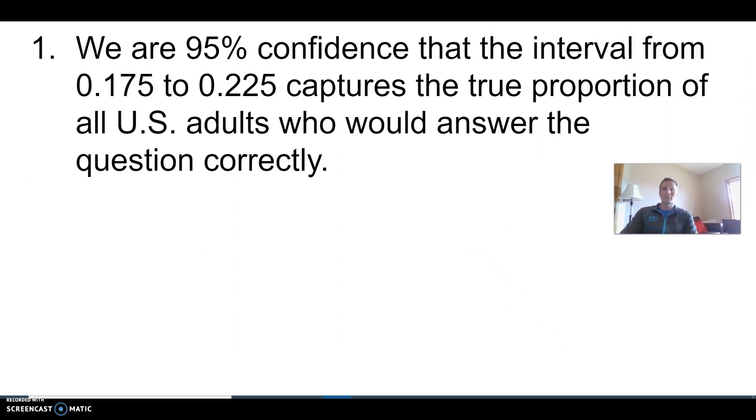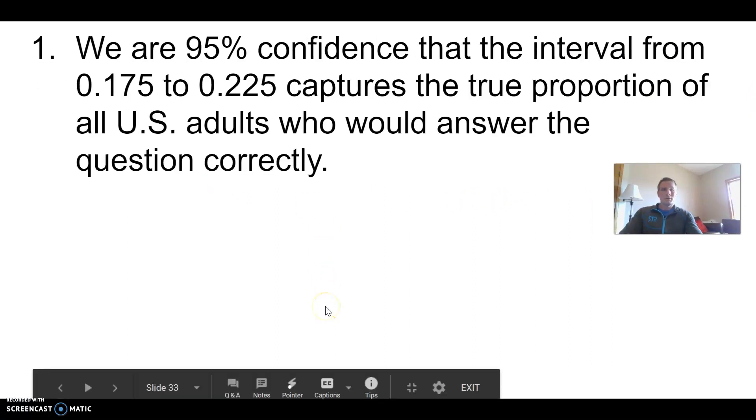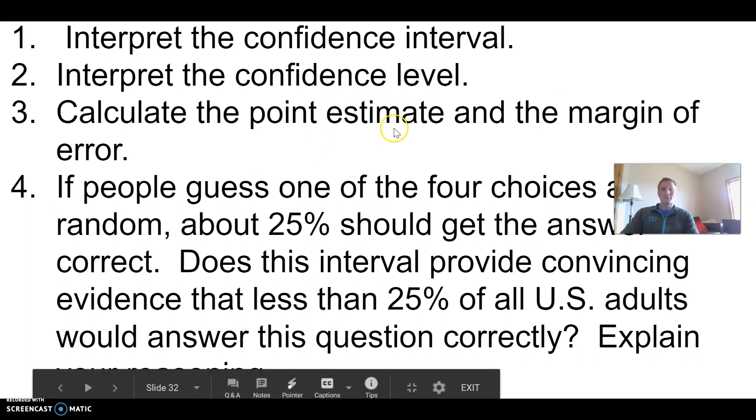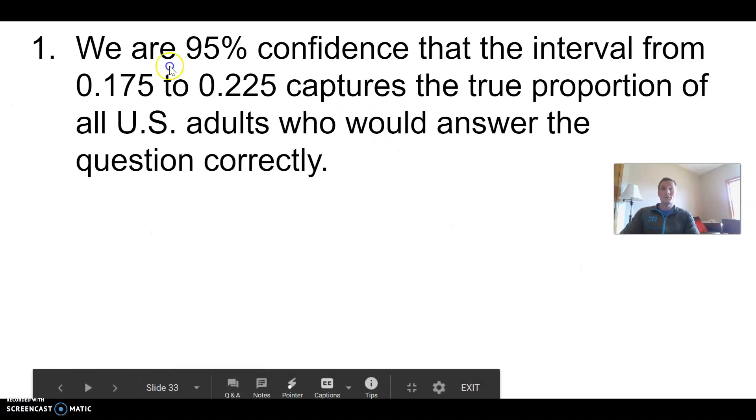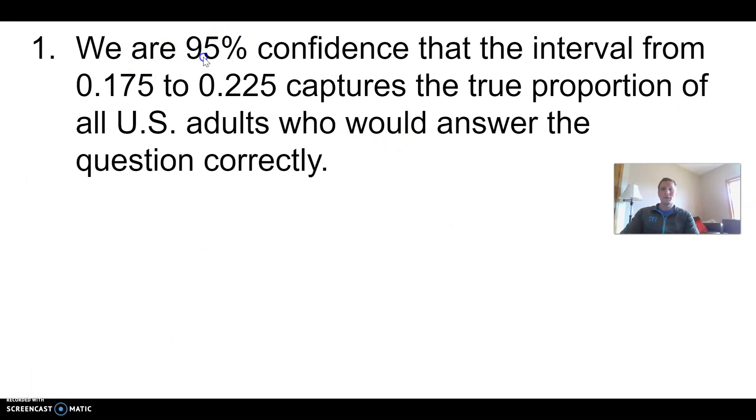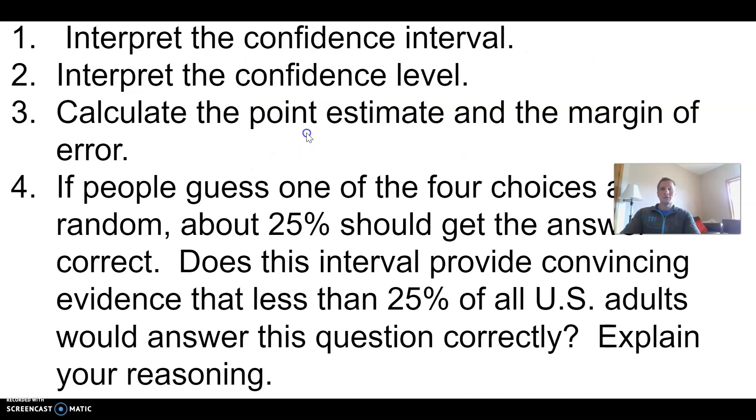You've got to explain your reasoning. The first question is to interpret the confidence interval. We just fill in the blanks. We are 95% confident that the interval from 0.175 to 0.225 captures the true proportion of U.S. adults who would answer the question correctly. Context at the end. This is just a form you can use every time - change the numbers and context as needed.